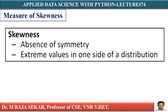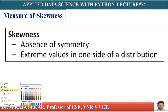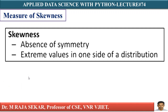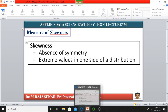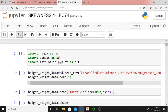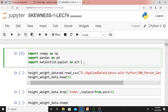What is skewness? In simple words, it is an absence of symmetry. Extreme values on one side of a distribution — that is known as skewness. I will discuss skewness in detailed manner in lecture number 76. As I told you, I will discuss a simple demonstration on skewness in lectures 74 and 75. Let me go to my Jupyter notebook. Now we will try to understand skewness with a simple example.